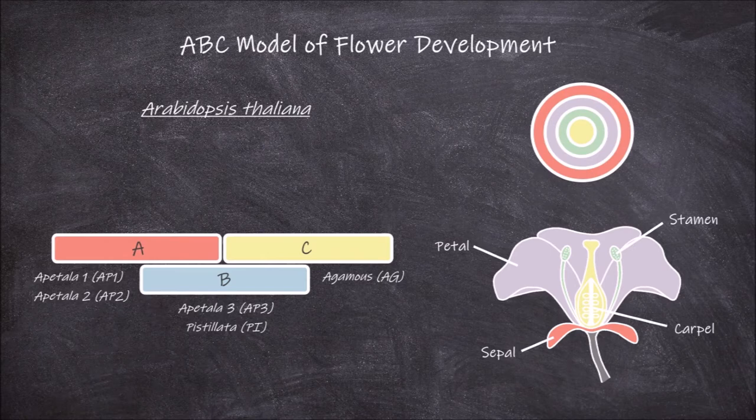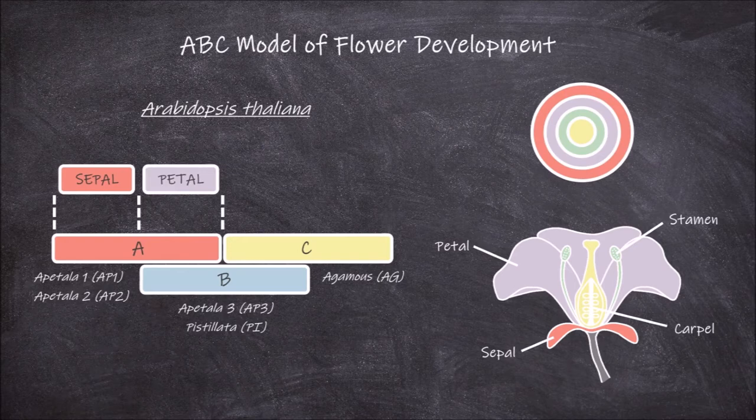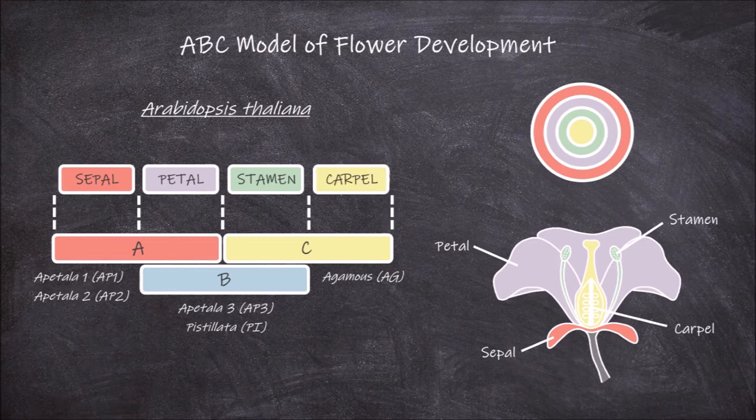A gene expression alone is responsible for the development of the sepal whorl. Both A gene and B gene expression together are responsible for the development of the petal whorl. Both B gene and C gene expression together are responsible for the development of the stamen whorl. C gene expression alone is responsible for the development of the carpal whorl.